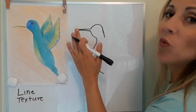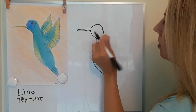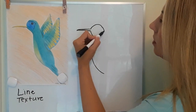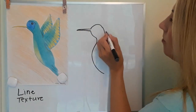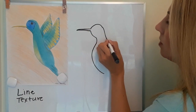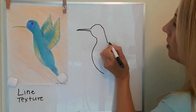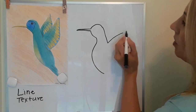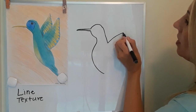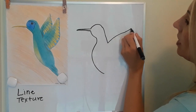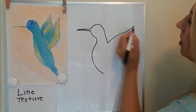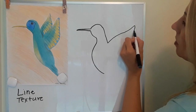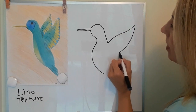The next step is we're going to start on the wing. I'm going to bring it down, then go up a little bit and then slightly curve down just a little bit — like an upside-down U — and then bring it back around.